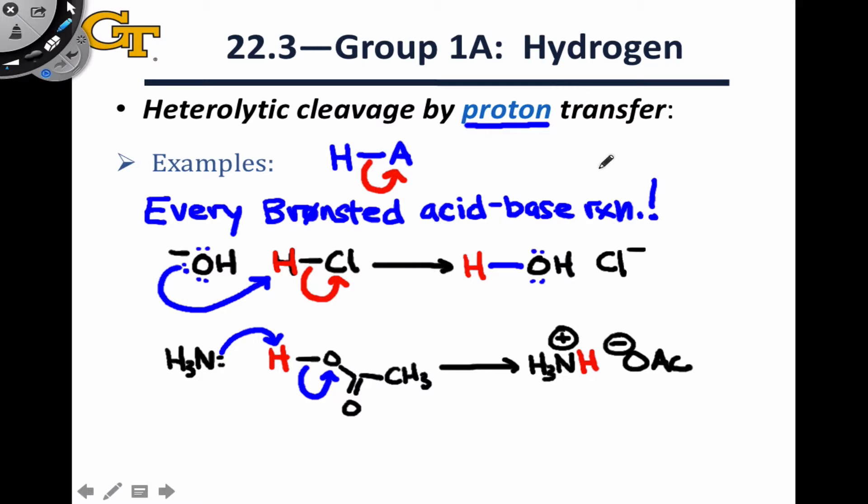Every Bronsted acid-base reaction under the sun fits into this paradigm of heterolytic cleavage by proton transfer. And this is a great way to synthesize hydrogen-containing compounds in which an electronegative heteroatom that could potentially serve as a base is connected to hydrogen.